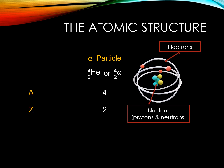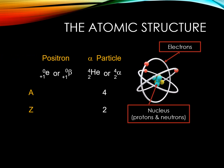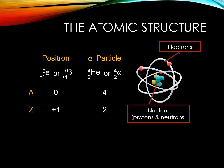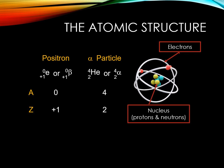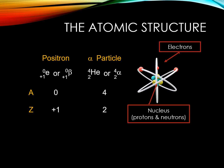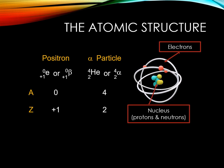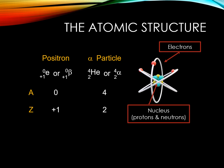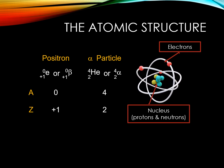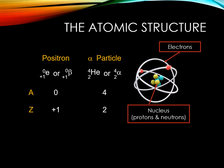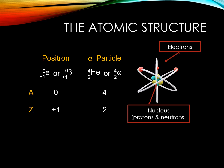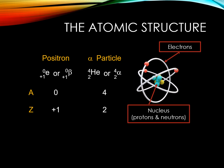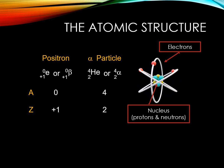Beta particles can either be high-energy electrons with a negative charge, or particles with the same mass as an electron but with a positive charge. This latter particle is a positron, and it carries a notation of E positive. Because it is matter that carries an opposite charge, it fits the name antimatter. When a positron is emitted, it rapidly loses energy until it meets an electron. This interaction annihilates the electron and positron to produce a pair of gamma rays moving in opposite directions. Take note: all elements with an atomic number greater than 83 are radioactive.